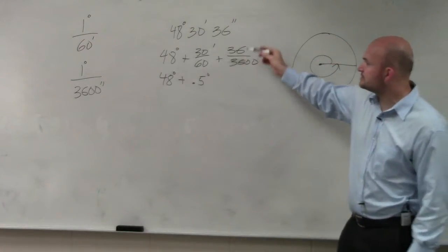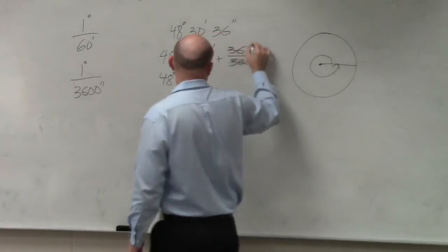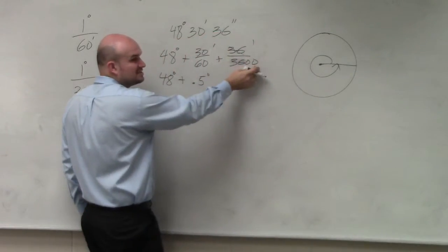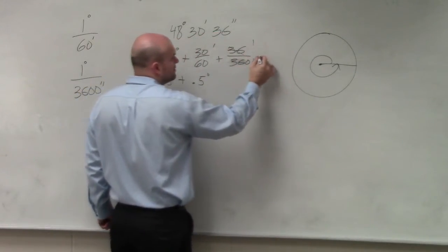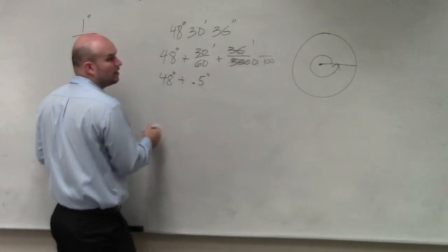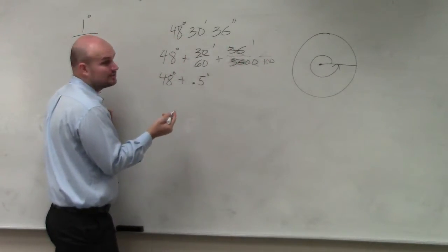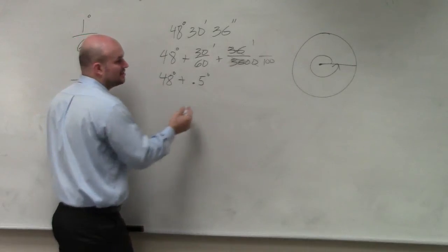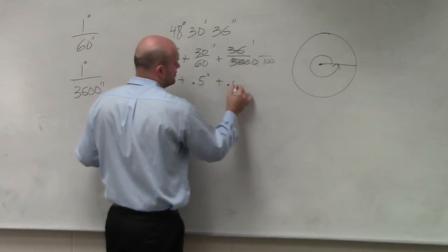And then, you could reduce this. 36 goes into 36 one time. 36 goes into 3,600 a hundred times. So you have 1 over 100. 1 over 100 is going to be 0.01 degree.